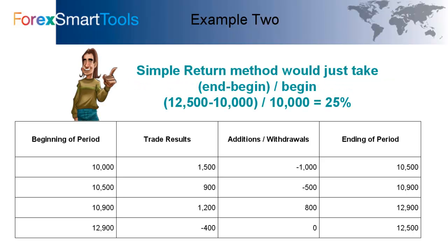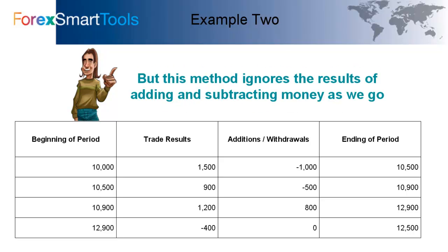A simple approach would just use the simple return method: take the end minus the beginning divided by the beginning. So we'd have our ending value of $12,500 minus the beginning value of $10,000, divided by $10,000. That gives us a rate of return of 25%. But this method ignores the results of adding and subtracting money as we go — the bonus we put in, the profits we took out as salary — they're not properly accounted for.